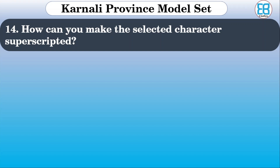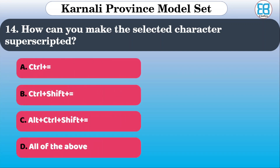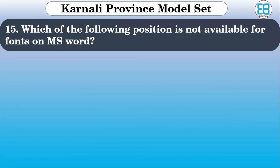How can you make selected characters superscript? The options are: Ctrl+=, Ctrl+Shift+=, Alt+Ctrl+Shift. The correct option is Ctrl+Shift+=.